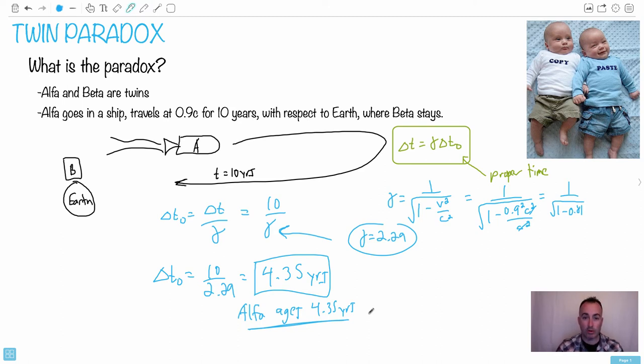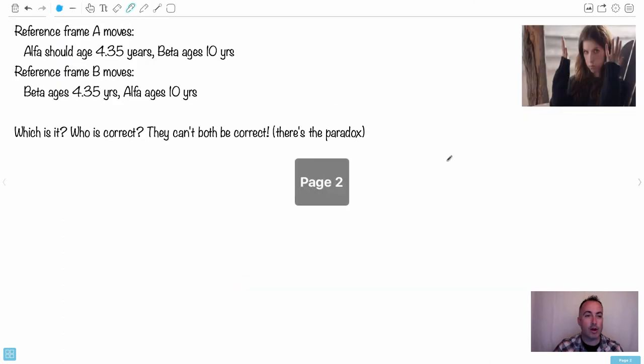This has been the reference frame where Beta isn't moving. In other words, where Beta is still, and it's Alpha moving. So we've taken that as the reference frame. However, you can take this and go another step. So when they're in the frame where Alpha is the one who moves, in other words, where Beta is still, that's the one we just did. Alpha ages 4.35 and Beta ages 10. We just did that one.